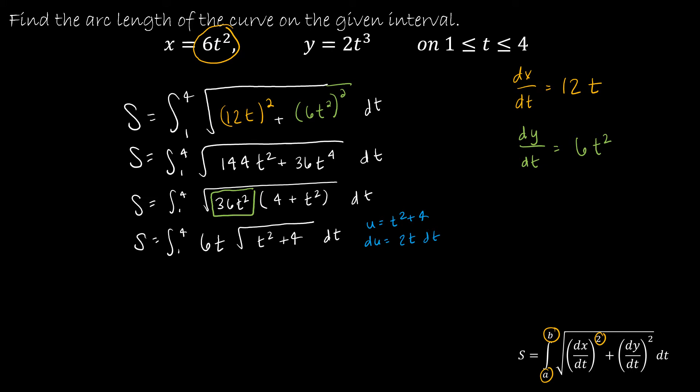And so what that tells me is in order to integrate, I need 2t on the inside. So I'm just going to think of this as 3 on the outside, and then 2t, and then t² + 4 dt. Because now this is essentially u^(1/2).